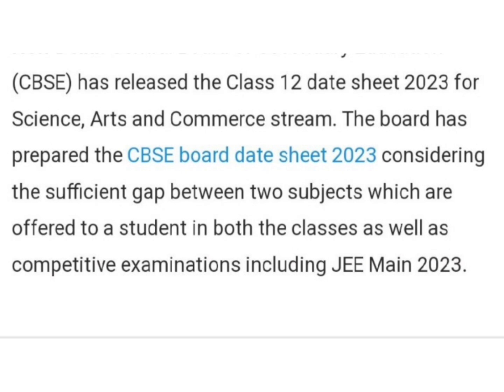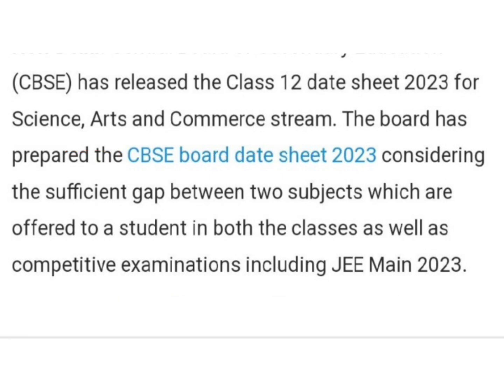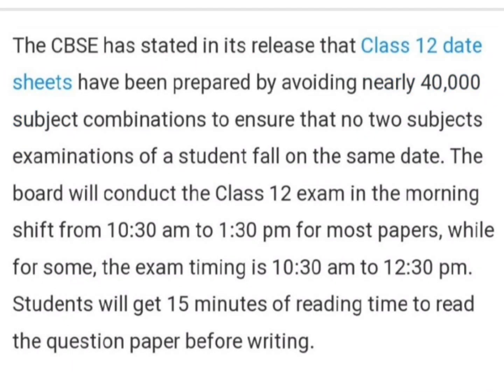The date sheet is for Science, Arts, and Commerce streams, and there is a sufficient gap between two subjects. A gap has been kept for students as well as for competitive exams including JEE Main 2023. CBSE has released the class 12th date sheet covering around 40,000 subject combinations, ensuring that if a student has two exams, they will not fall on the same date.